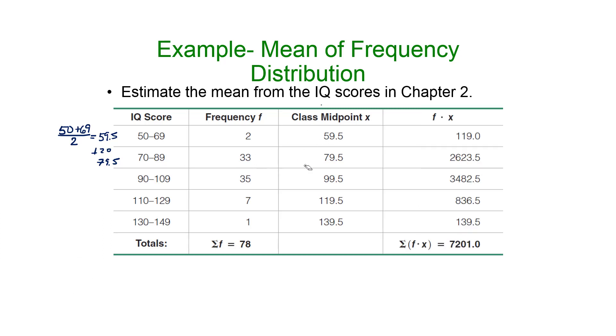To get the sum of the data, we need to multiply the frequency times the data value all the way down. Add those products up to get the sum of the data values. Multiply the frequency times the class midpoint, all the way down.